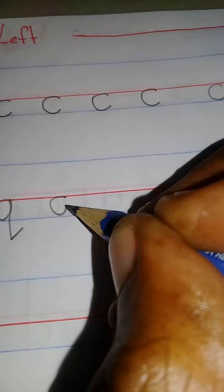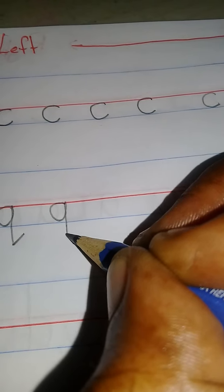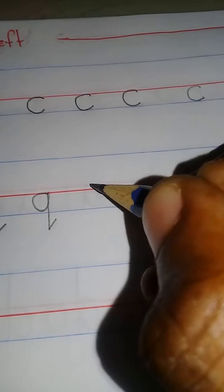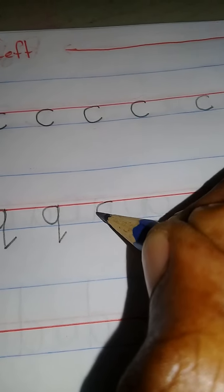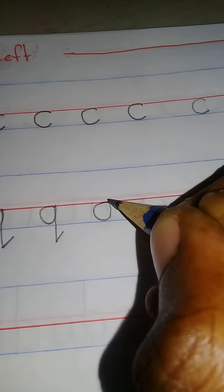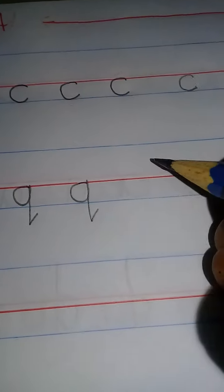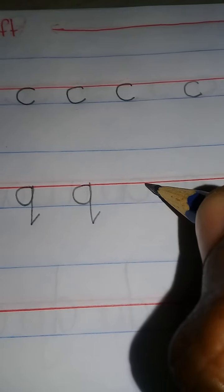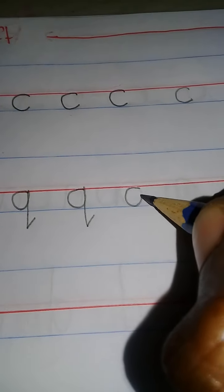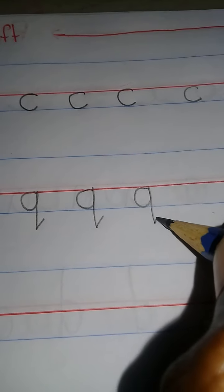C, up, down, kick to the right. Finger space. C, up, down, kick to the right. Finger space. C, up, down, kick to the right.